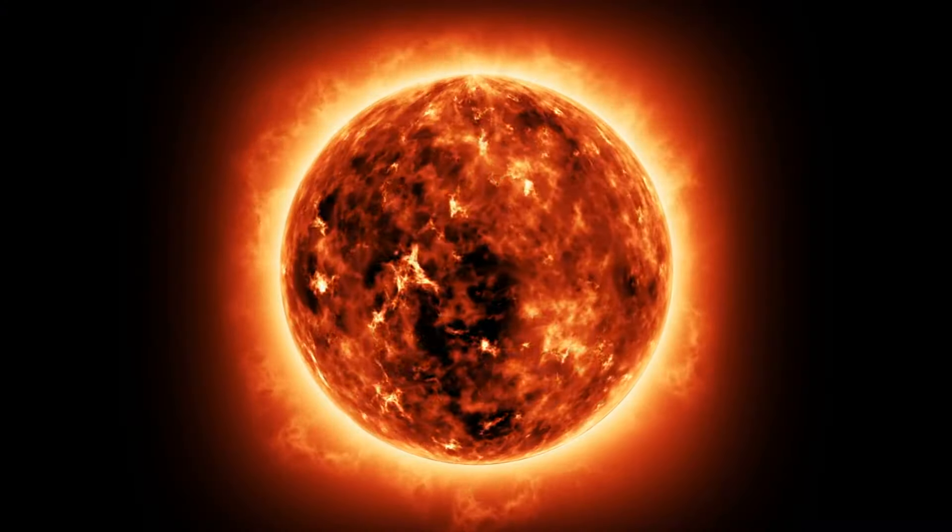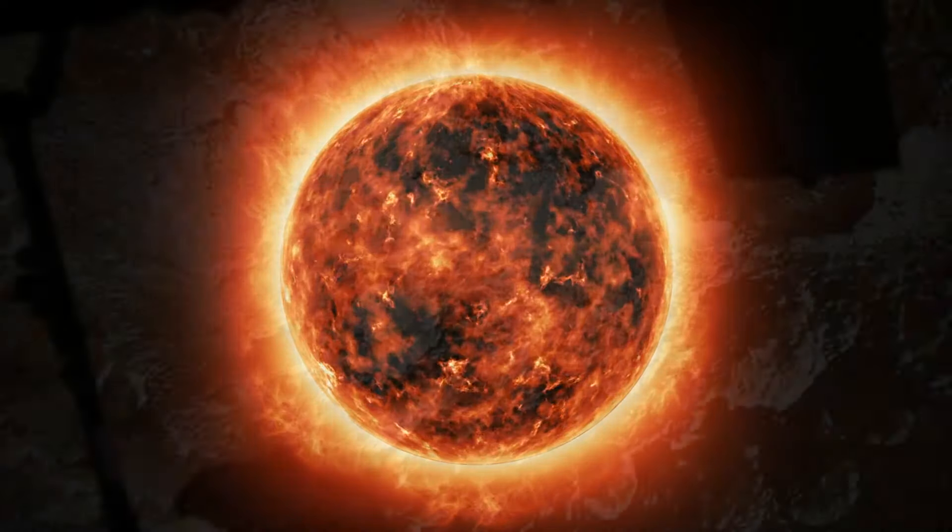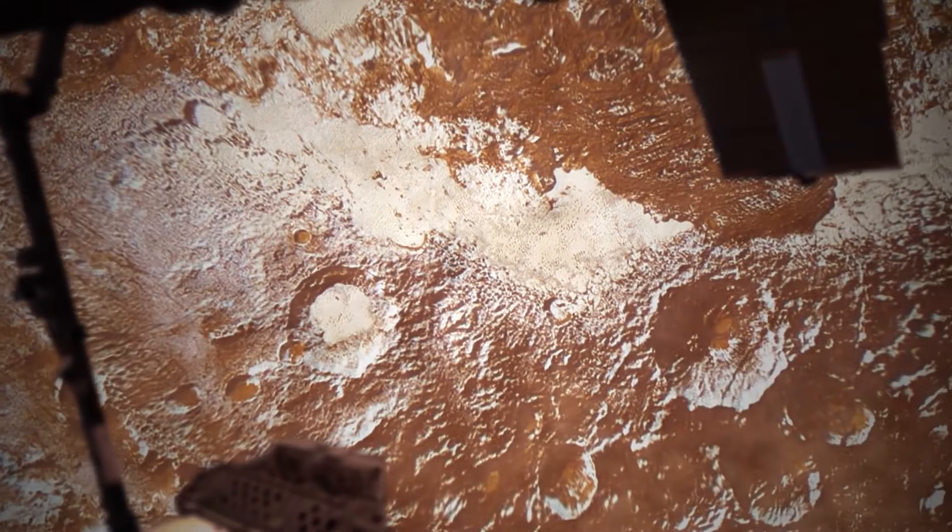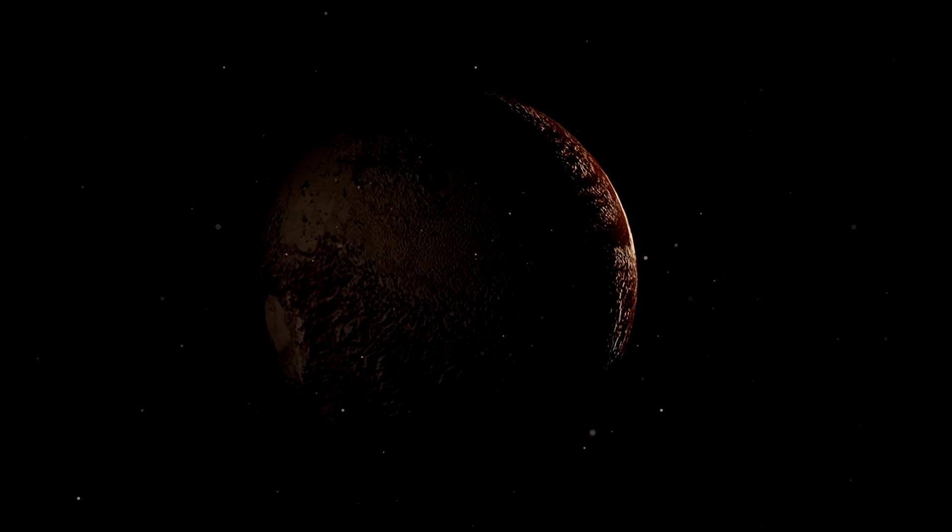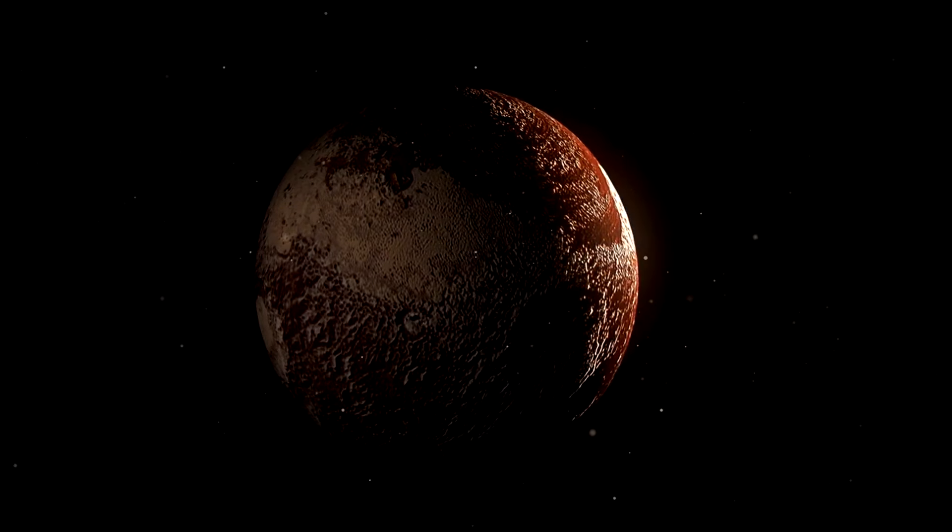Conversely, as Pluto moves away from the Sun and the temperature drops, the gases in the atmosphere condense back onto the surface as frost, leading to a significant contraction of the atmospheric layer. This cyclical expansion and contraction of the atmosphere create a delicate veil around Pluto, influencing how sunlight interacts with the dwarf planet.